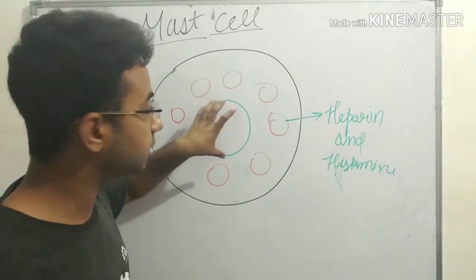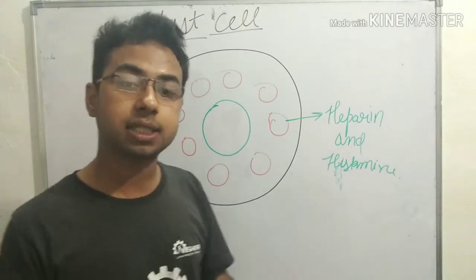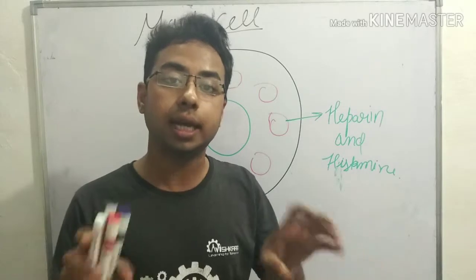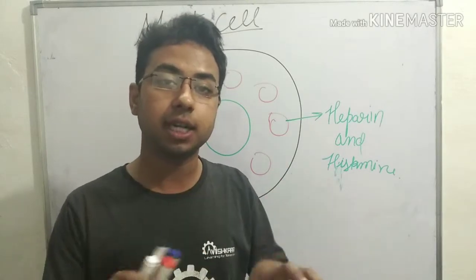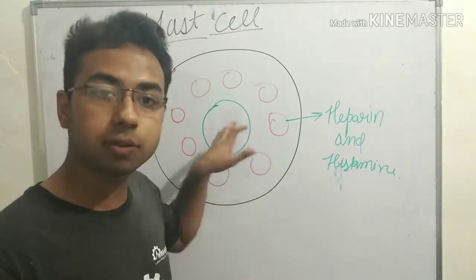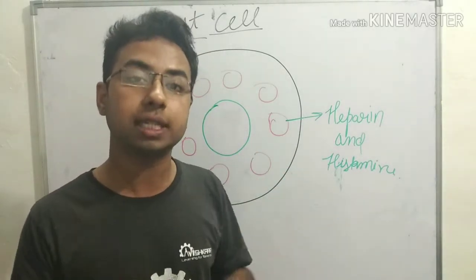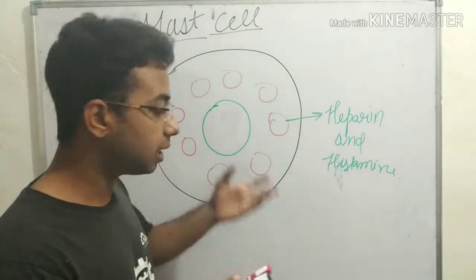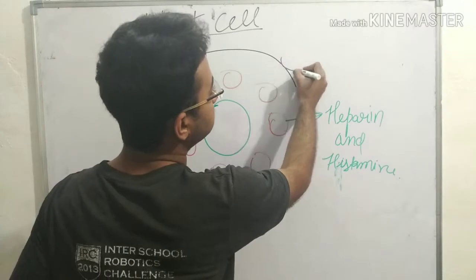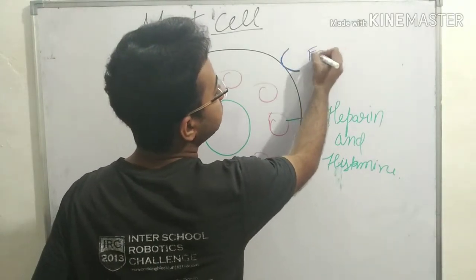The mast cell contains a circular nucleus. The mast cell structure is similar to basophils, but in basophils there is a lobular nucleus — meaning two lobes of the nucleus are present — whereas in mast cells there is a circular nucleus. Mast cells also contain FC receptors on their surface.